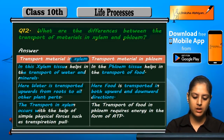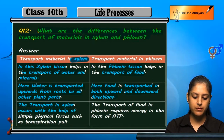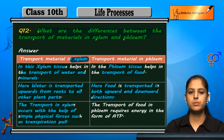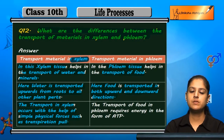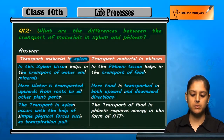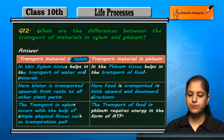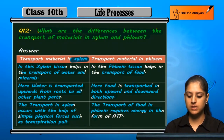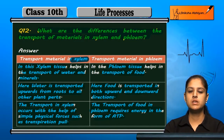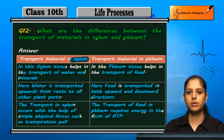Transport in xylem occurs with the help of simple physical forces such as transpiration pull, whereas phloem transport requires energy in the form of ATP. These are some of the differences between transport of materials in xylem and phloem.